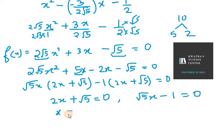The first value is x = -√5/2 and the other is x = 1/√5. So this is my first zero and this is my second zero.